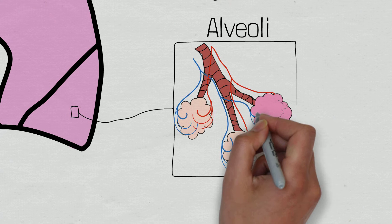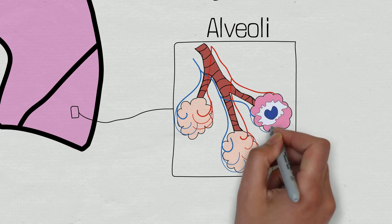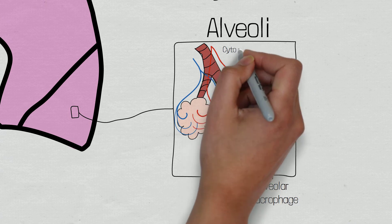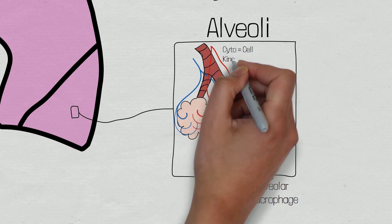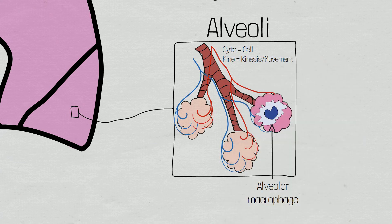Within the alveoli there are fixed macrophages known as alveolar macrophages, and they provide a way of eliminating pathogens and debris through phagocytosis, which is the engulfment and destruction of the pathogen. These macrophages are also capable of excreting cytokines, which signal other immune cells to the area to help fight the infective agent — a process known as chemotaxis.